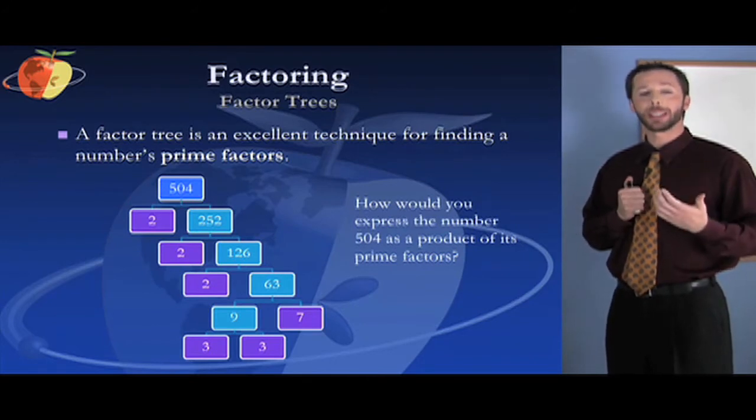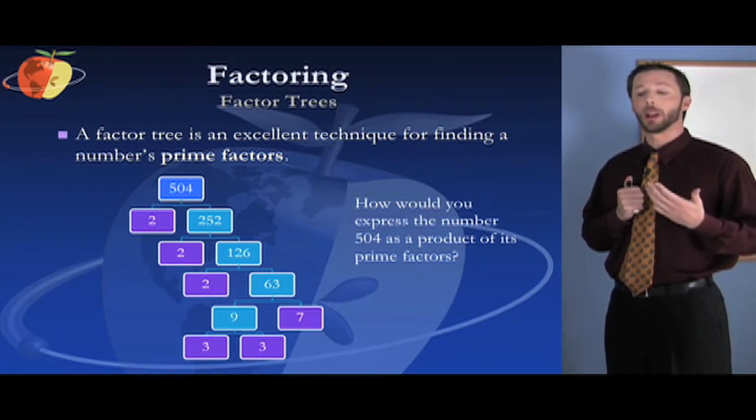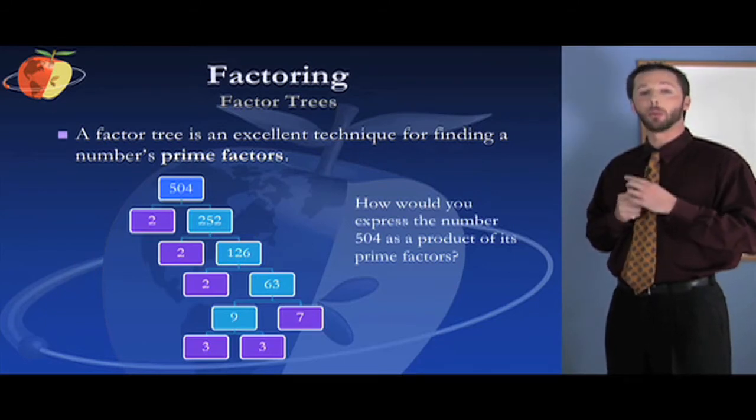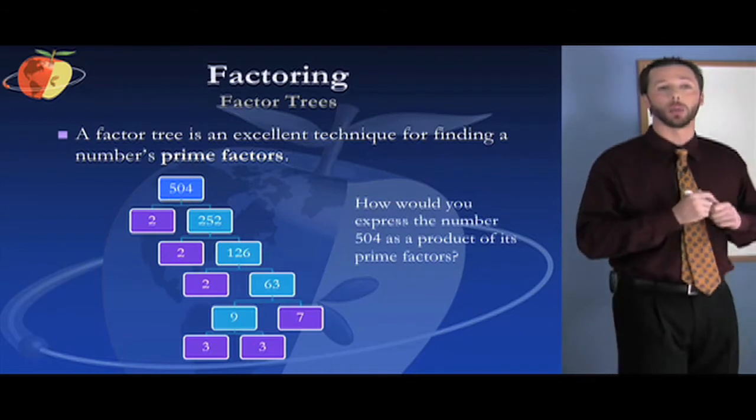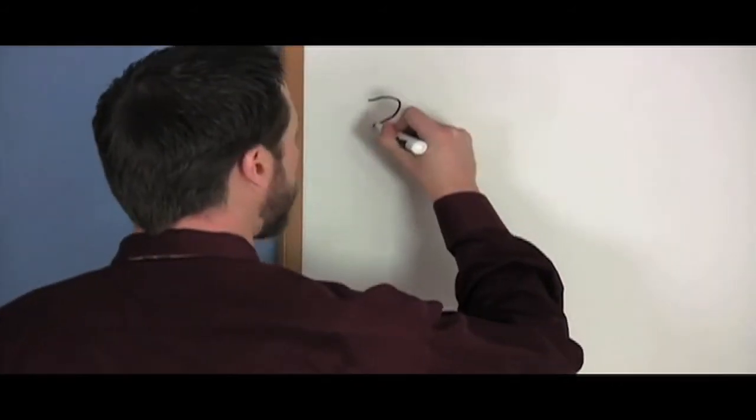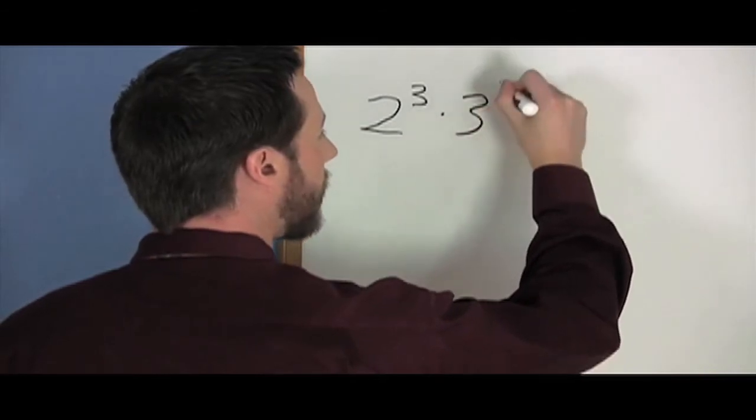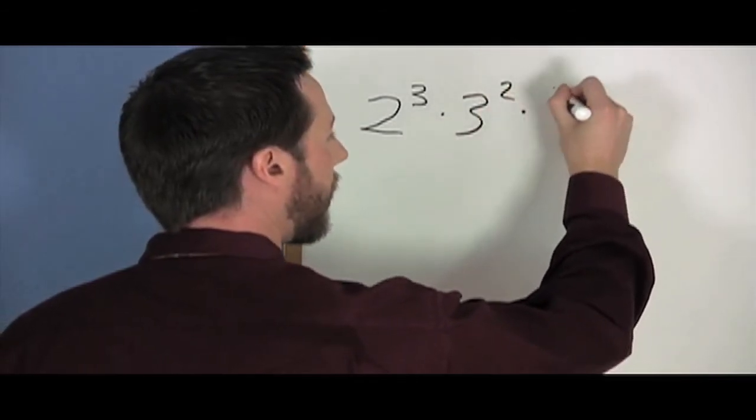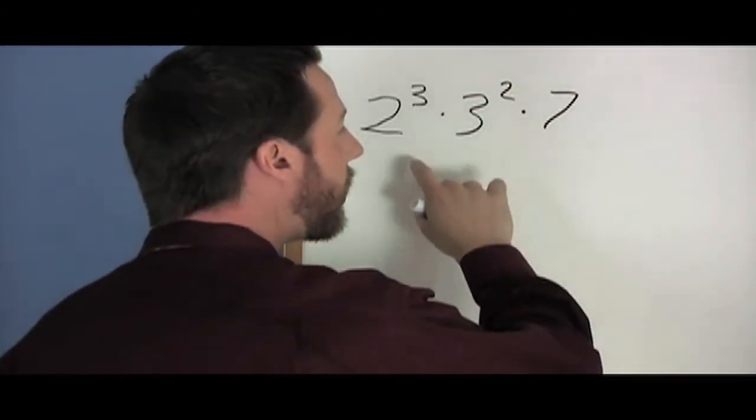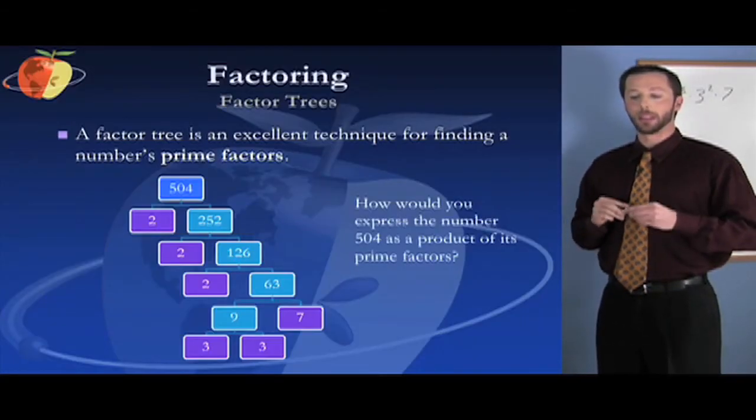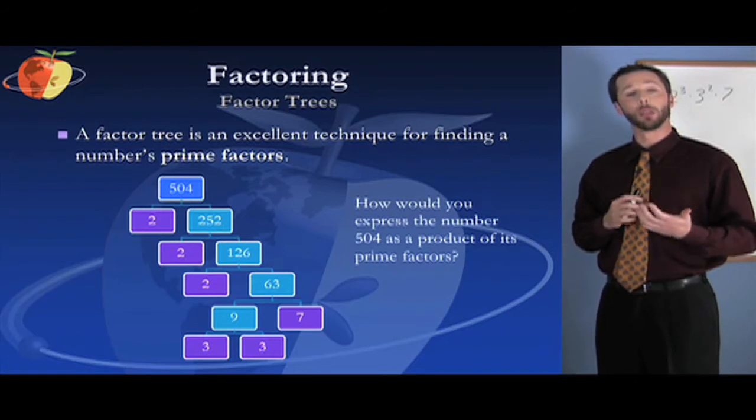If you were going to express this number as a product of its prime factors, you see that you have three 2's, you have two 3's, and you have one 7. So they might write it this way: 2 to the third power times 3 to the second power times 7. Look for the number to be written in this way in the answer selections on the test. This is an example of how you can use a factor tree to find prime factors.